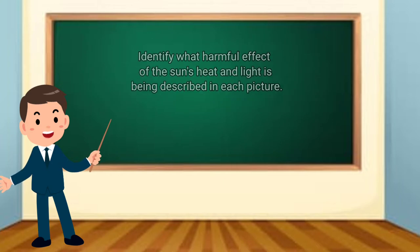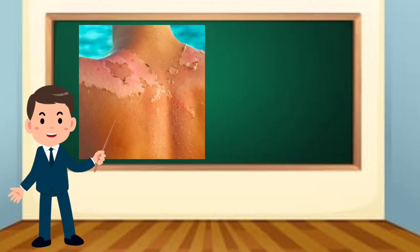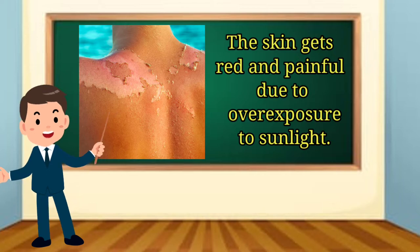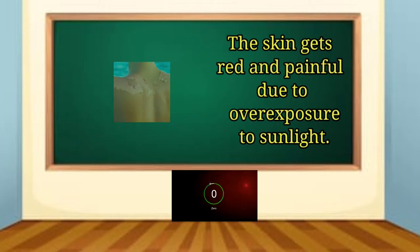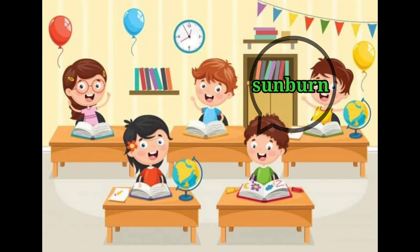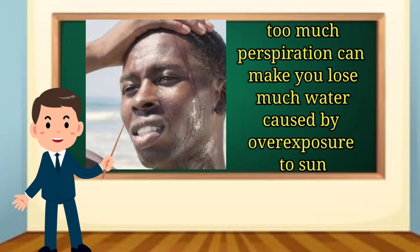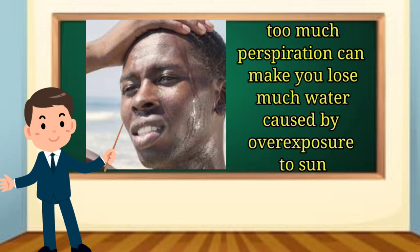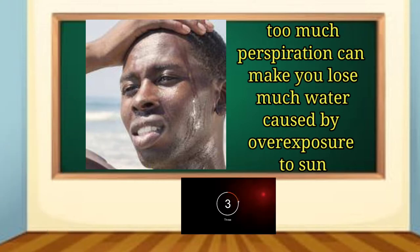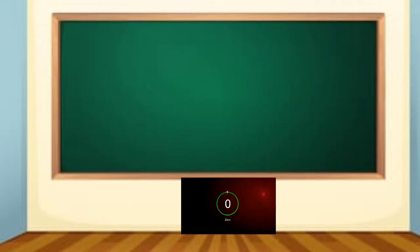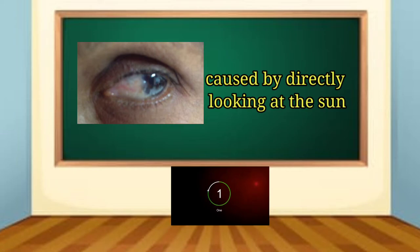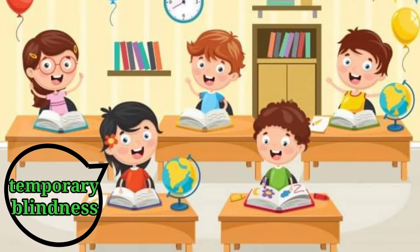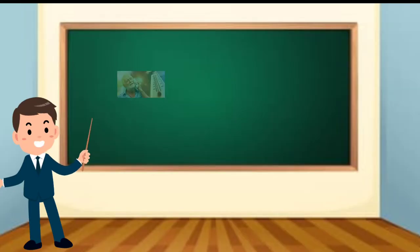What do you see in this picture? The skin gets red and painful due to overexposure to sunlight — sunburn. Correct! Look at this: too much perspiration can make you lose much water, caused by overexposure to the Sun — dehydration. You're right! And this one is caused by directly looking at the Sun.